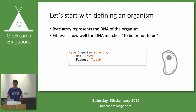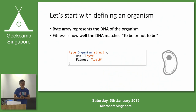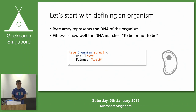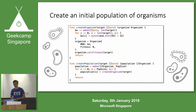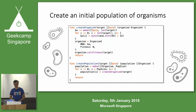Let's go to the algorithm — I'm obviously going to use Go. Even if you don't know Go, this is simple enough to understand and shows you the beauty and simplicity of Go. We create a byte array to represent DNA, and we create a struct of an organism with just two things: the DNA, which is a byte array, and a fitness, which is a float. We create an initial population of organisms by randomly creating the byte arrays and assigning them to organisms.